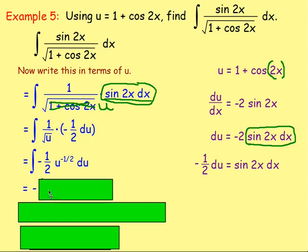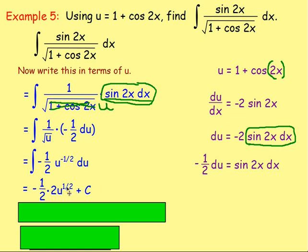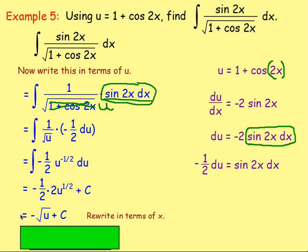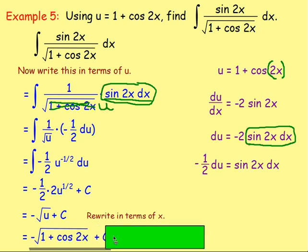Now we can integrate. Negative 1/2 stays as negative 1/2. Adding 1 to the power: negative 1/2 add 1 is positive 1/2, so we'll have u to the power of positive 1/2. Remember when you integrate you also divide by the new power, so we're dividing by 1/2, which is the same as multiplying by 2. So negative 1/2 times 2 is negative 1, giving us negative u to the power of 1/2, which is negative root u plus c. Finally, rewriting in terms of x, since u equals 1 plus cos 2x, the answer is negative the square root of 1 plus cos 2x plus c.